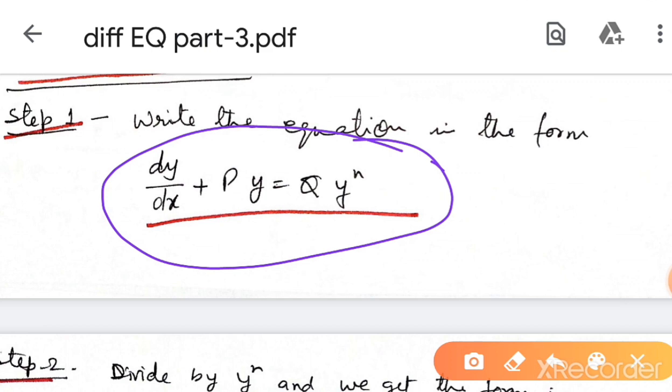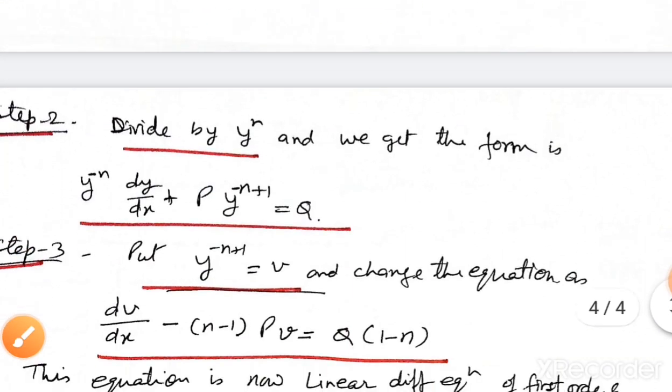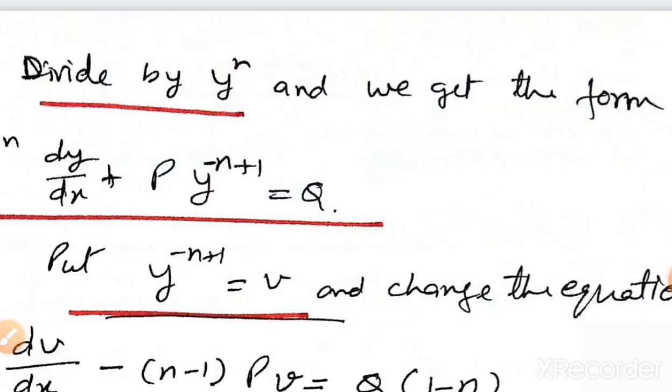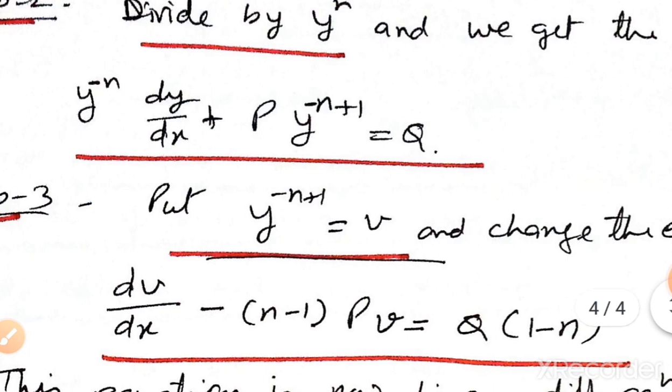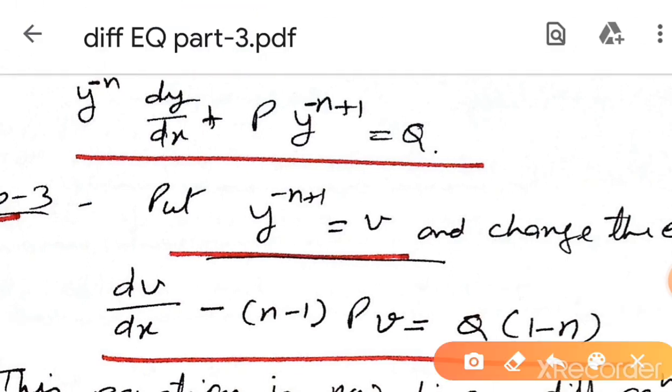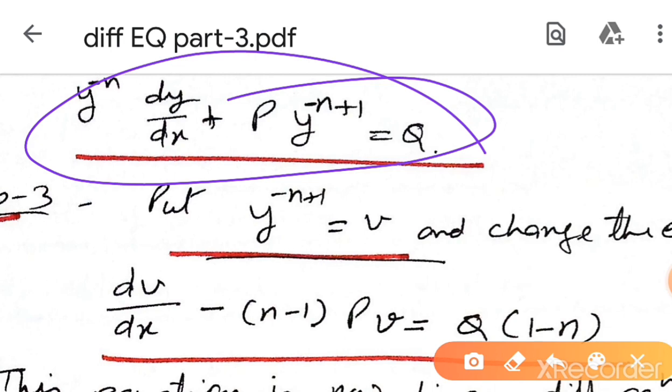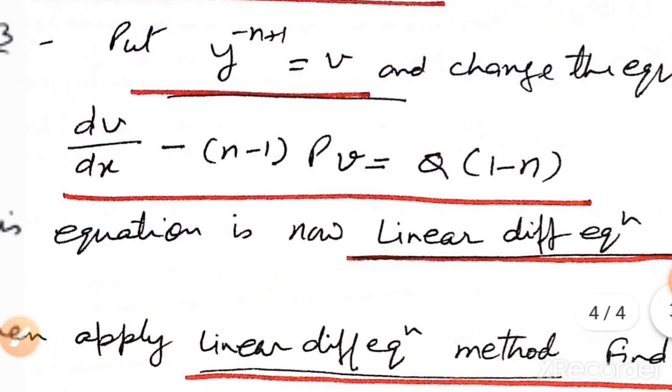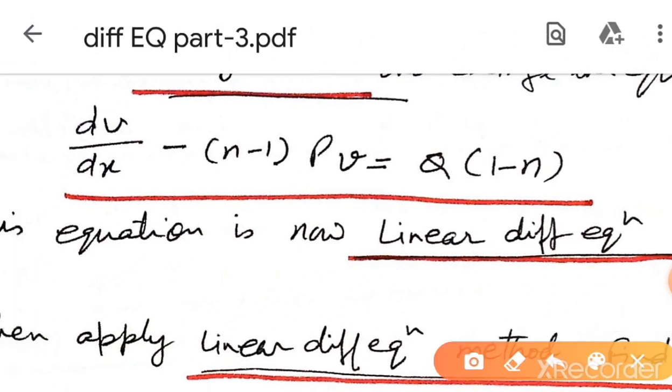Divide this equation by y to the power n and we get this form. We will convert this form by substitution: put y to the power n equal to v and change the equation to the standard linear form.